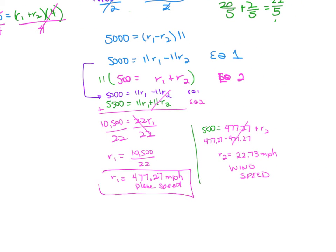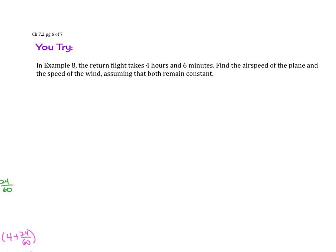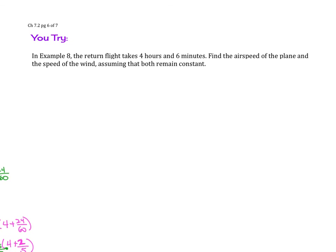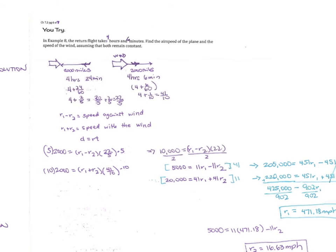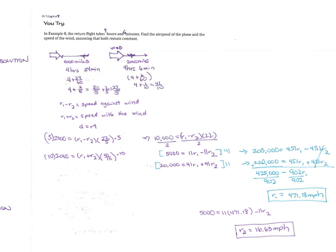Go ahead and try out this example. In Example 8, the return flight takes 4 hours and 6 minutes instead. Try solving for the speeds yourself. If you worked it out, you would find that the airplane speed is 471.18 miles per hour and the wind speed is 16.63 miles per hour.